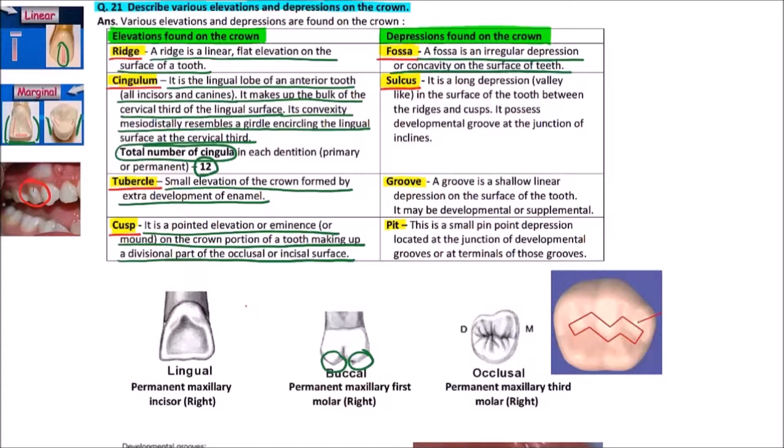Next is sulcus. It is a long depression which is valley-like on the surface of the tooth between the ridges and the cusps, and it possesses developmental grooves at the junction of inclines. Here we can observe that this is the sulcus.